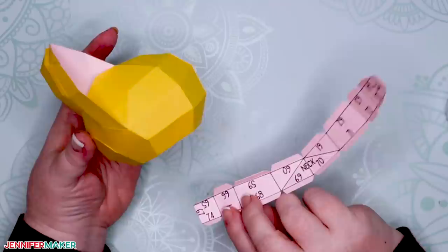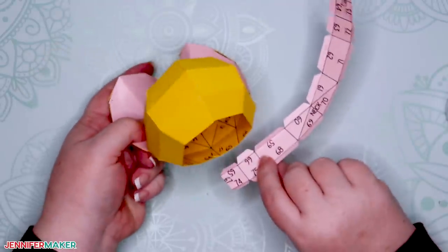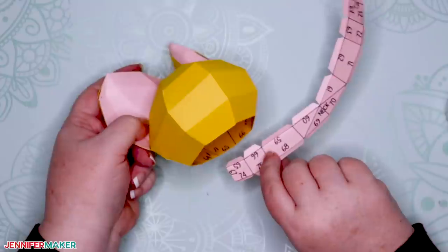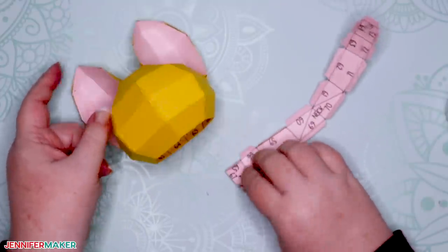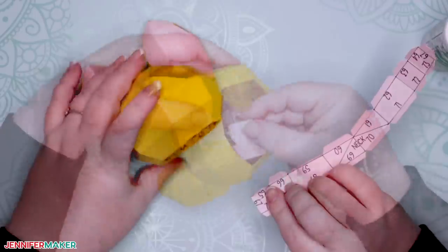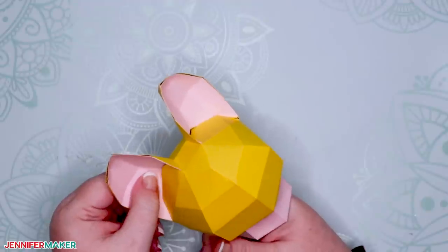Once the head and ears are attached, it's time to attach the neck. I recommend starting with number 65, matching it up from the collar to the head. Then work your way around the entire circumference of the head, one tab at a time.